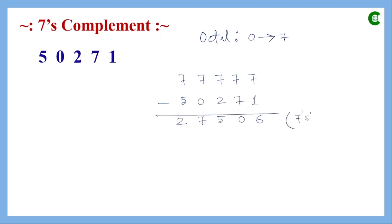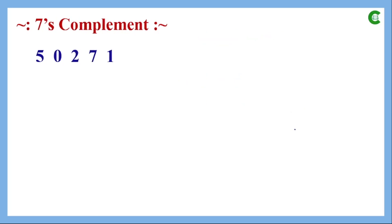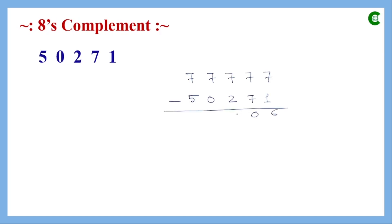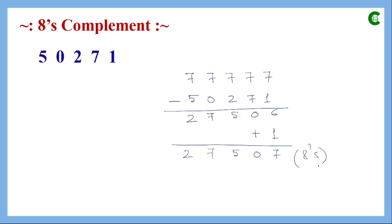This gives us the seven's complement of the given number. Next we find the eight's complement of the same octal number. We first find the seven's complement, which gives 60572, and then add 1 to obtain the eight's complement, which is 70572.